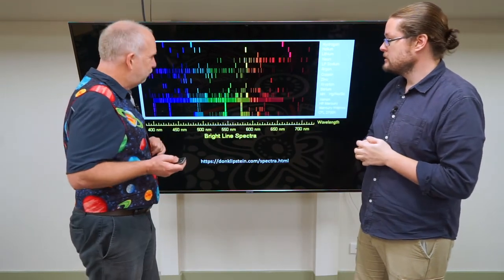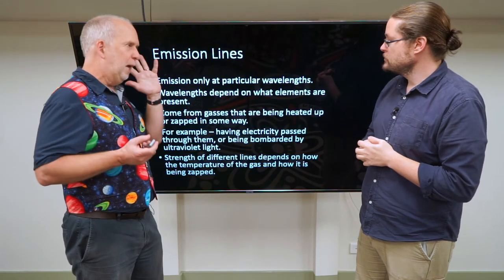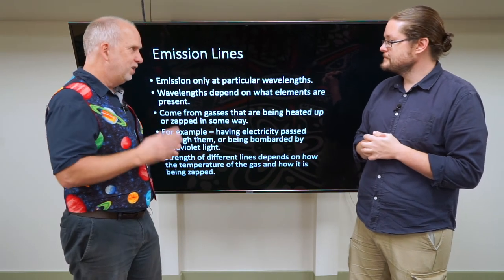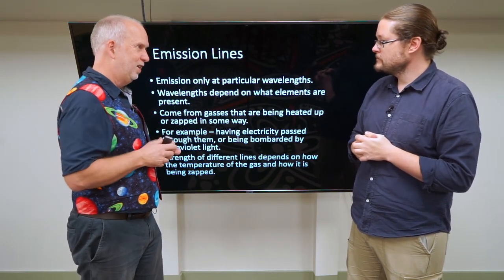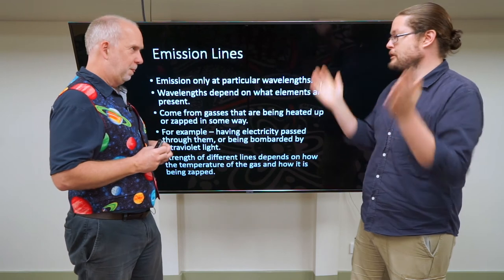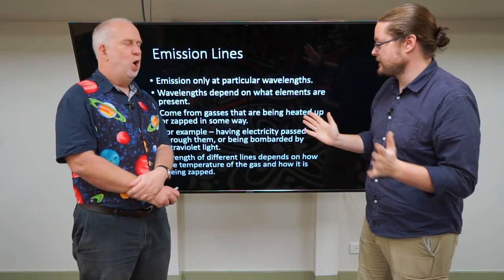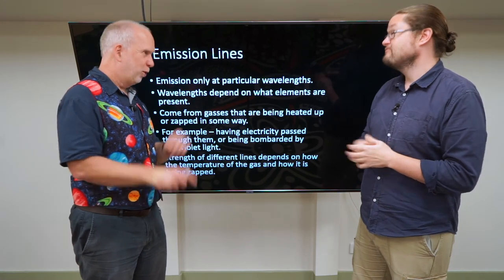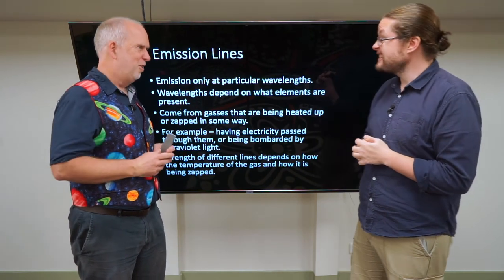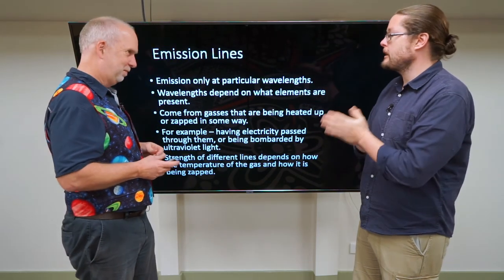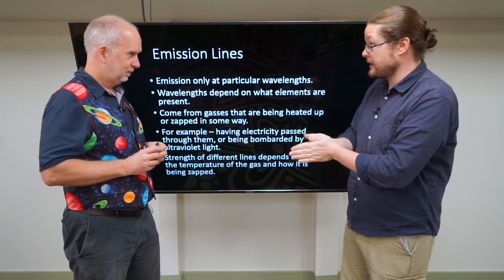These emission features help identify what is present. They're called emission lines - emission because light is being emitted, and lines because they're only at particular wavelengths. You could call them emission spikes because on a spectrum they look like spikes or narrow mountains, but we call them lines because they're at specific wavelength colors.